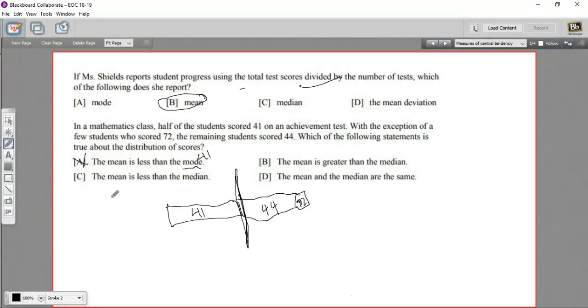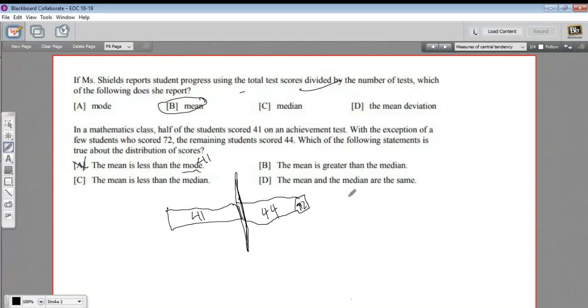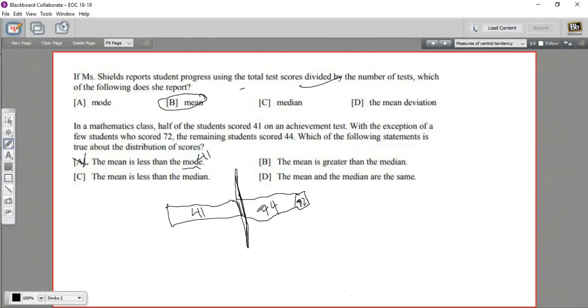Now, our other choices, it says the mean is less than the median, the mean is greater than the median, and the mean and median are the same. So how can we compare those two? Well, first of all, let's try to figure out what the median is. And this diagram, I think, gives us a good start on that. The median, we would line up the data points from lowest to highest and pick the middle. So in this case, it says that there are half the students score 41 and the other half score either 44 or 72. Well, we know there's an even number of data points. So the median, the two middle numbers are going to be 41 from this side of the line and 44 from this side of the line. So our median is going to be halfway between those two. So we actually know what the median is. It's going to be 42.5. So that's our median.